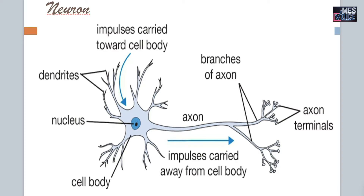This is the structure of a neuron where all parts are marked clearly. You can differentiate the dendrites, the cell body where the nucleus is present, and a long axon which carries information from the cell body to the axon terminals. From this point, the information is transmitted to the next neuron.